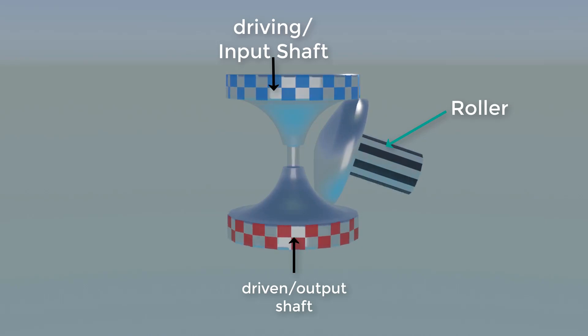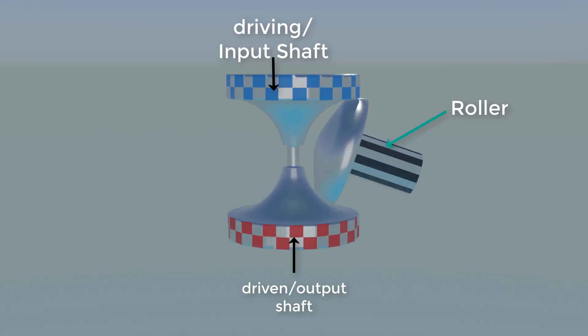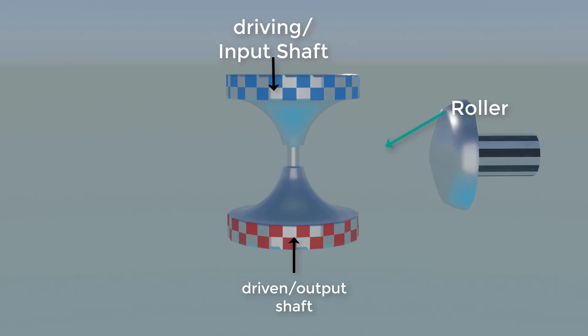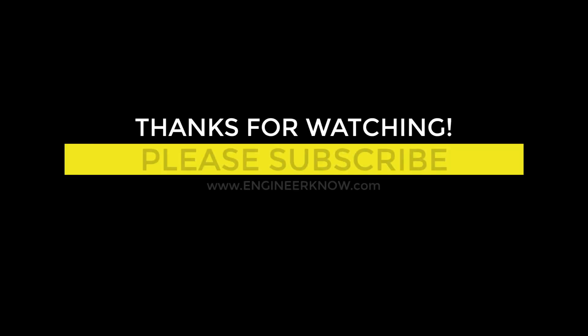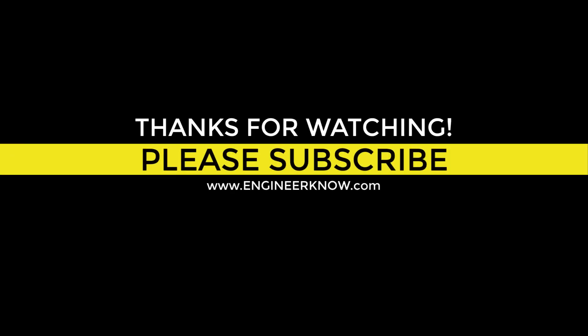Toroidal CVT can transmit very high torque at high efficiencies, average 91.6 percent. These kind of transmissions have been used in Nissan Cedric and Gloria cars having 3.0 liter engines. These are suitable for SUVs and LTVs.